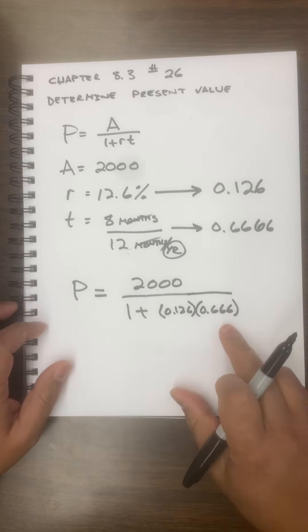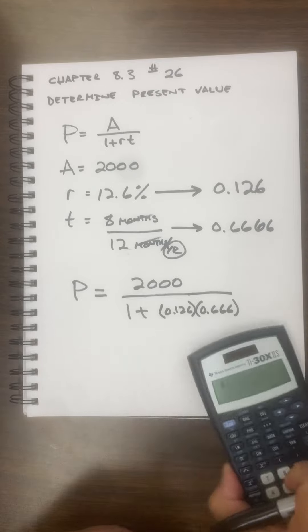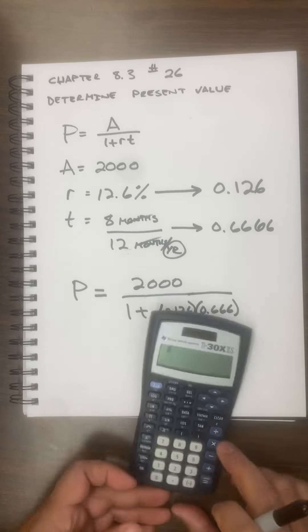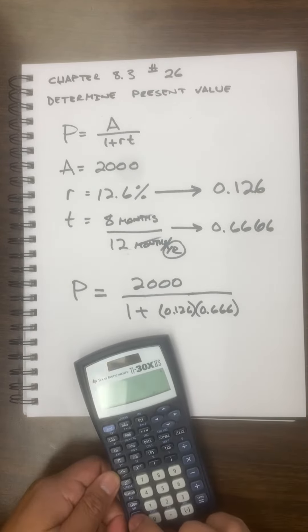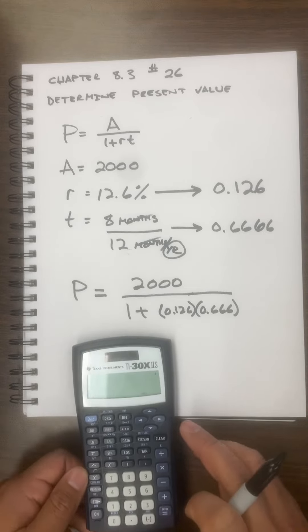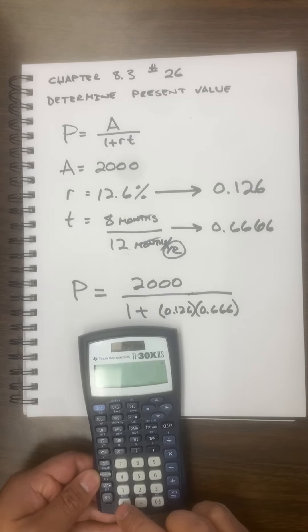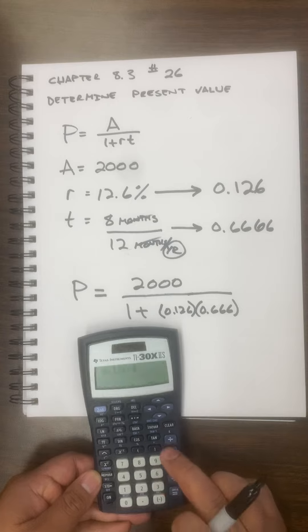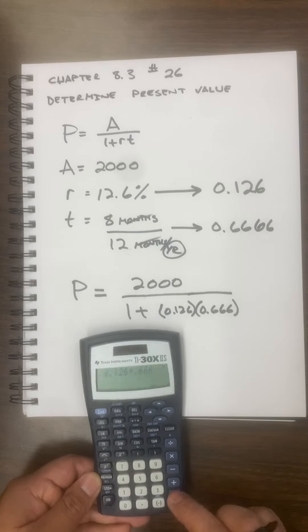I could have used 0.66 or 0.67, but I'm just going to go with 0.666 and calculate. 0.126 times 0.666.